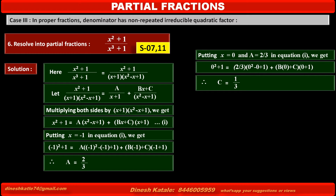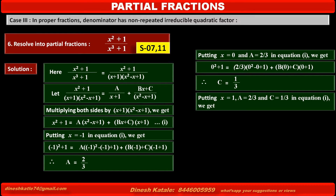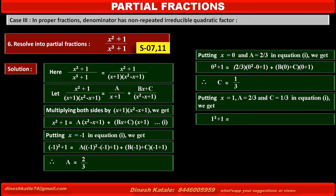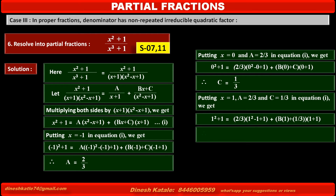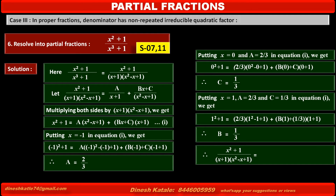Now, to find the value of B, putting x = 1, A = 2/3, and C = 1/3 in equation 1: 1² + 1 = (2/3)(1² - 1 + 1) + (b·1 + 1/3)(1 + 1). Solving, we get B = 1/3.